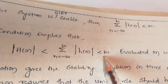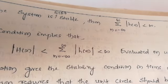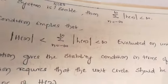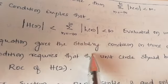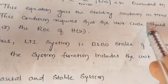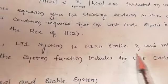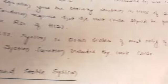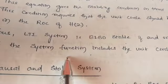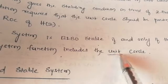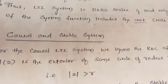This condition implies that after simplifying, the value should be less than infinity, and it must be evaluated on the unit circle. This gives the stability condition in terms of the Z-transform. Thus an LTI system is BIBO stable if and only if the ROC of the system function includes the unit circle.